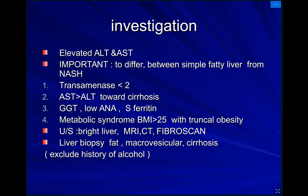Investigations show elevated ALT and AST in case of NASH. To differentiate fatty liver from NASH, there will be elevation of ALT and AST in NASH, while in non-alcoholic fatty liver before formation of inflammation, ALT and AST will be normal. Transaminase will be less than two-fold of normal — if normal is 30, it will be less than 60. When AST is more than ALT, this means the patient is progressing towards cirrhosis, which is different from viral hepatitis where ALT is usually more than AST.